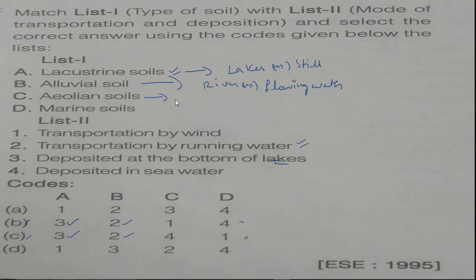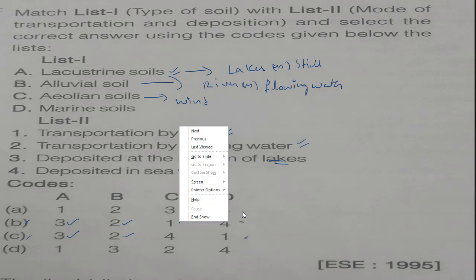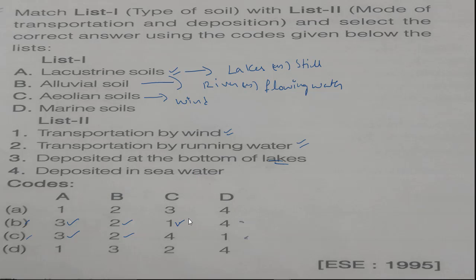The next one is aeolian soils. Aeolian soils are transported by wind. So C will be 1. From this we can surely say that B should be the answer.